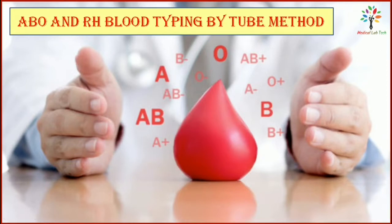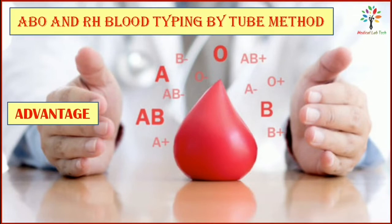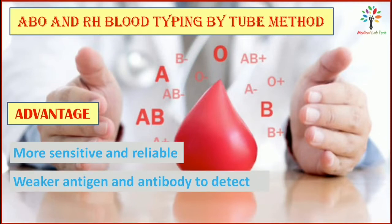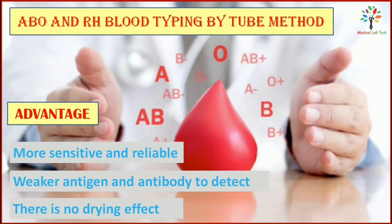Now let's talk about the advantages of tube method. Tube method is more sensitive and reliable, and can be used for blood transfusion in the blood bank. Weaker antigens and antibodies can be detected by this technique. There is no drying effect in the tube method, whereas there is a drying effect in the slide method.